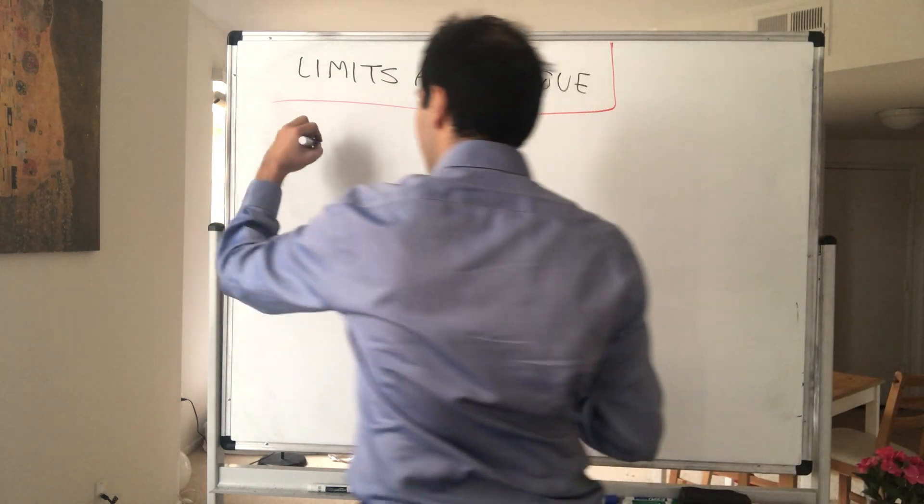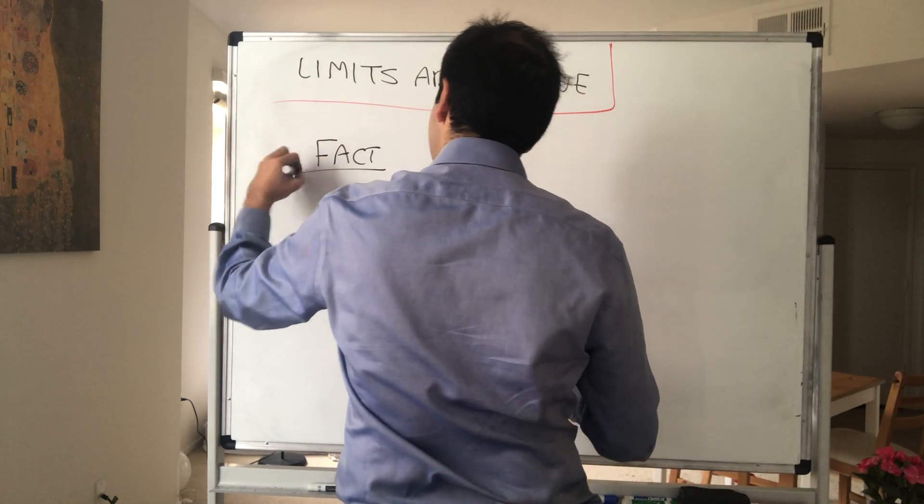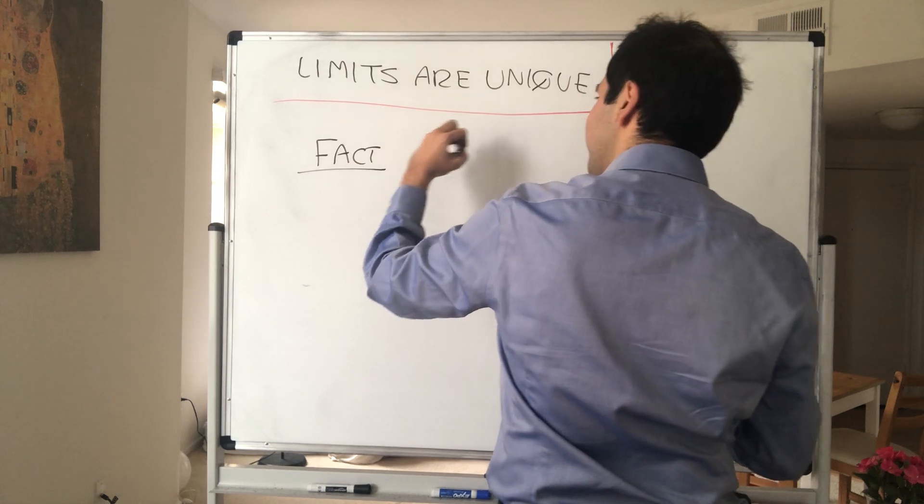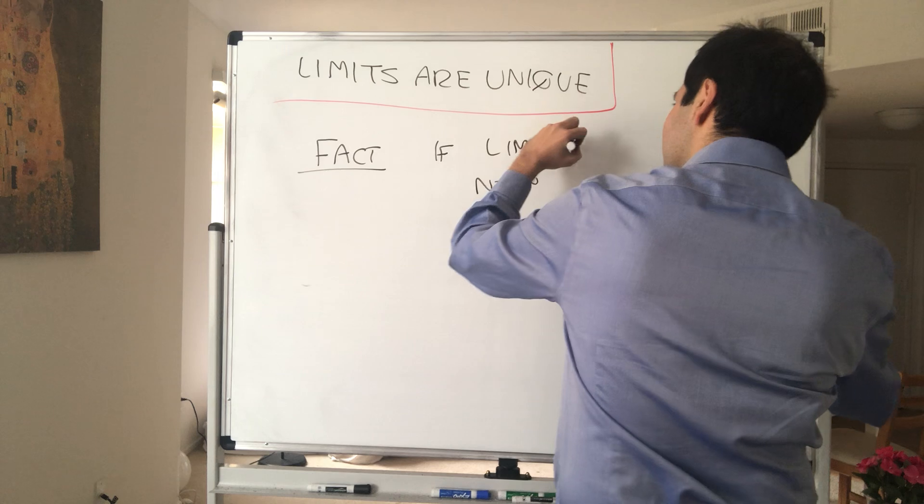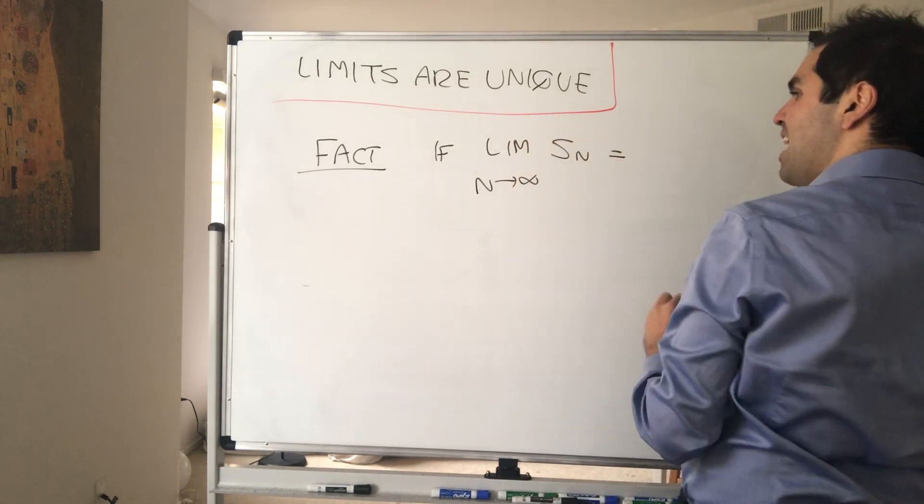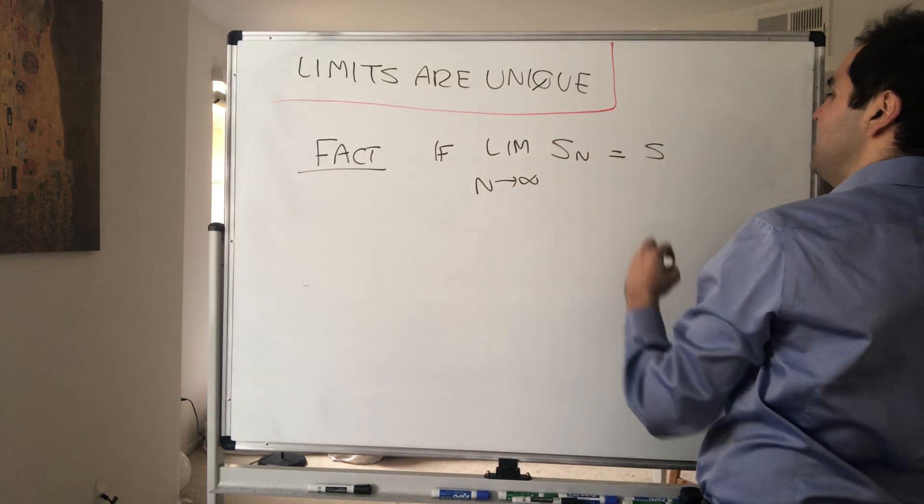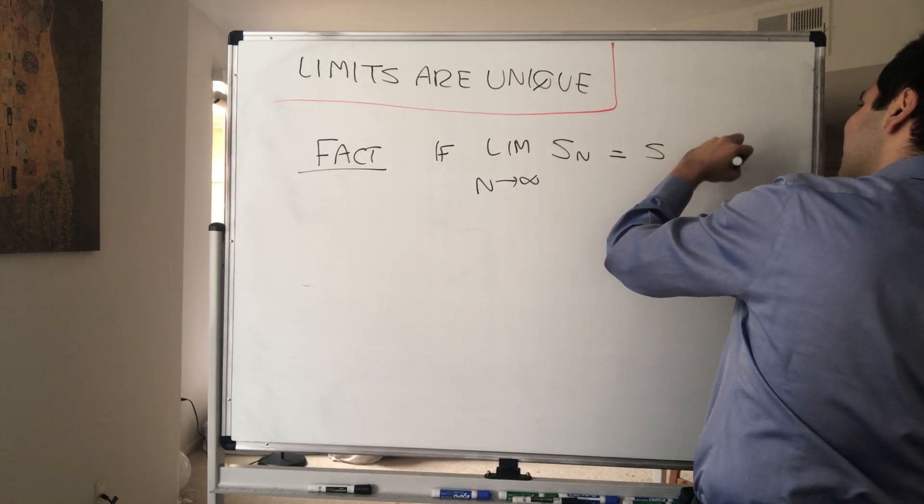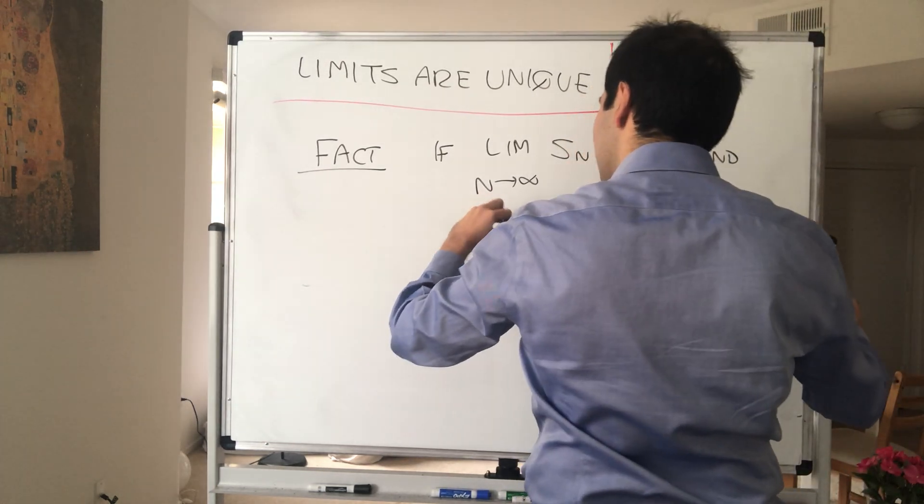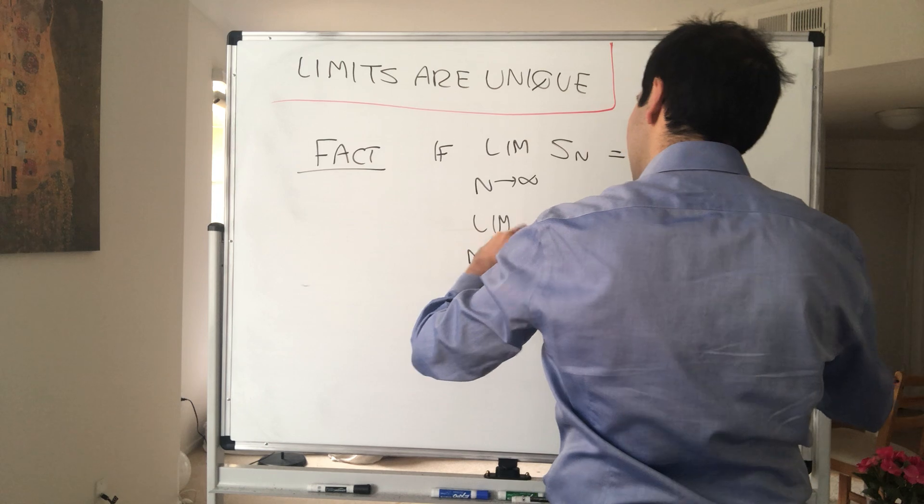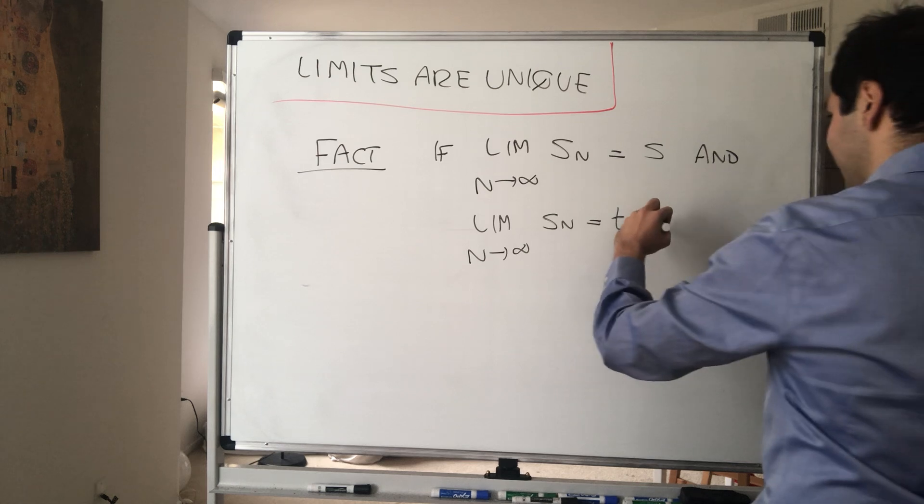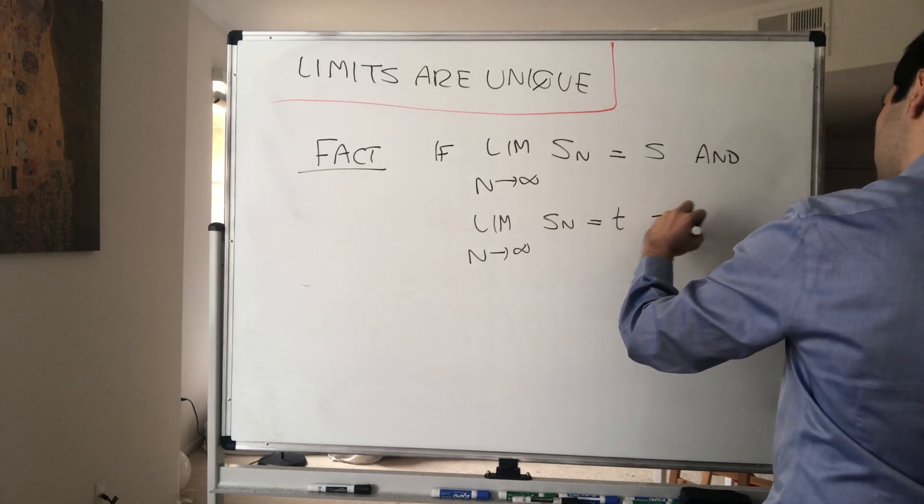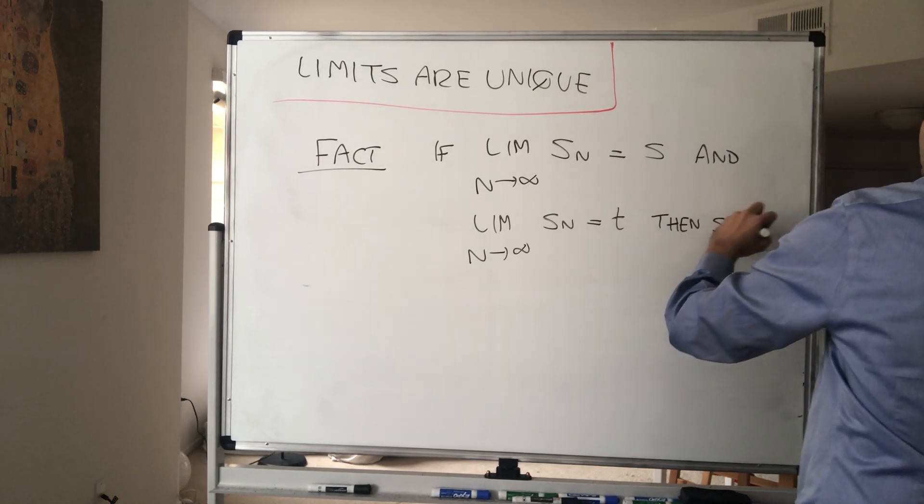In particular, what I would like to show is the following. Namely, if Sn is a sequence that converges to S, so if limit n goes to infinity of Sn equals S, and the limit as n goes to infinity of Sn equals T, then those two things have to be equal, then S equals T.